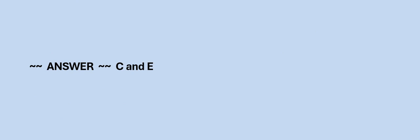Next question: Which network category applies to the SOHO internal network? Option A: SD-WAN. Option B: LAN. Option C: WAN. Option D: Internet. The correct answer is Option B.